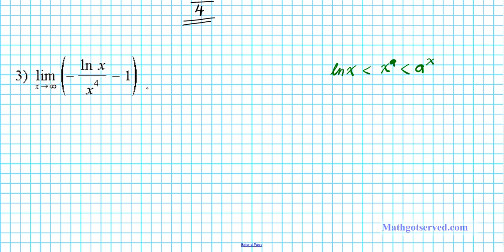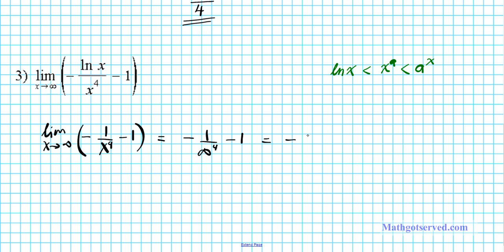At infinity, the logarithm behaves like a constant — it's so slow that it behaves like a constant. So we can write this as the limit as x approaches infinity of 1 over x to the 4th minus 1. Now let's evaluate this by direct substitution. We have negative 1 over infinity to the 4th minus 1, which becomes negative 1 over infinity minus 1. Negative 1 over infinity is just 0 minus 1, and the final answer is negative 1.